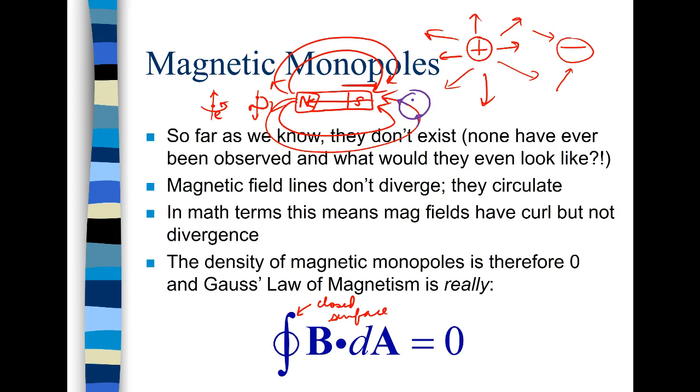So a surface integral. Okay. We're not talking about a loop but like a three-dimensional object. Okay. Even if I take the whole thing. Well okay. I have enclosed some magnetic field lines within this. But I have an equal amount of north and south field lines. So my density of magnetic monopoles is really zero. I have an equal number of north and south. So this is really Gauss's law of magnetism. That the integral through a closed surface of B dot dA is zero.